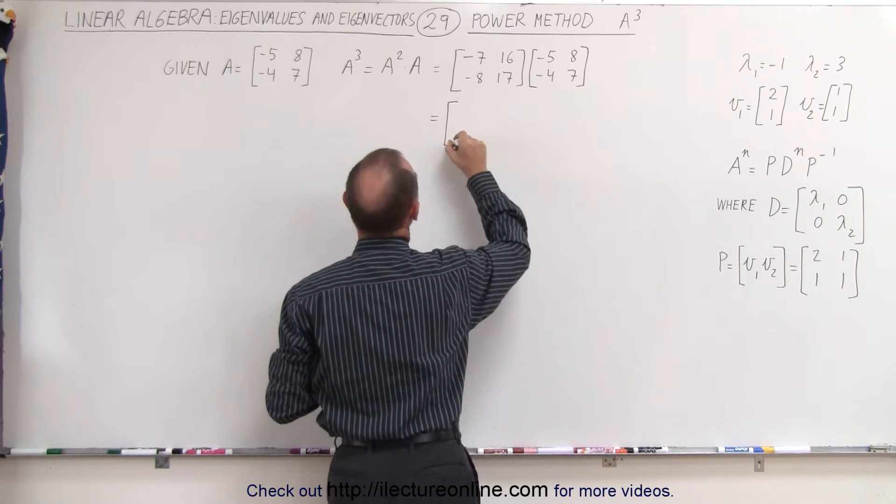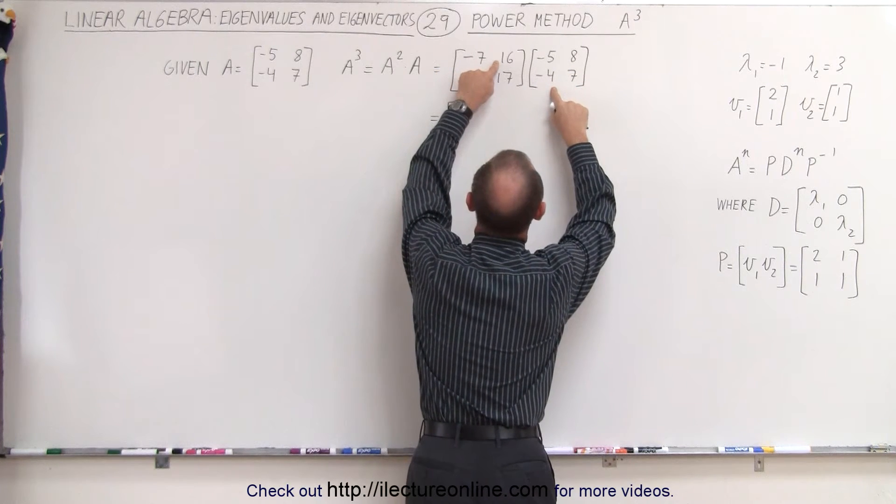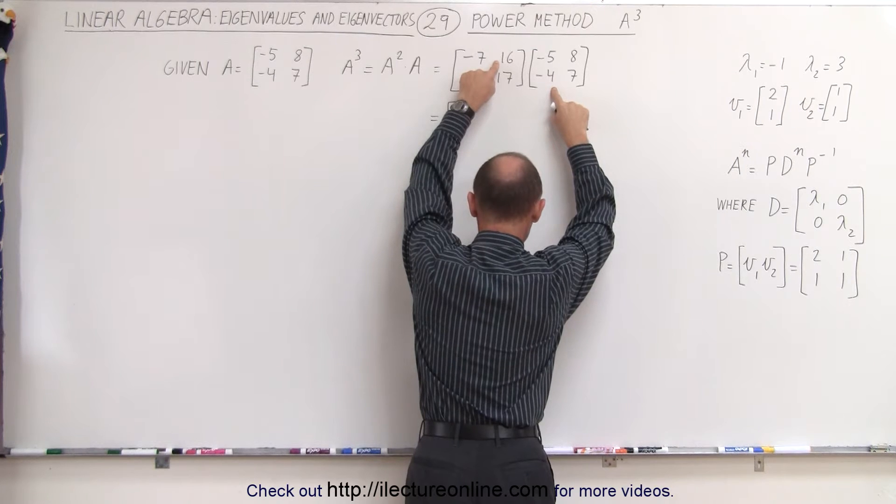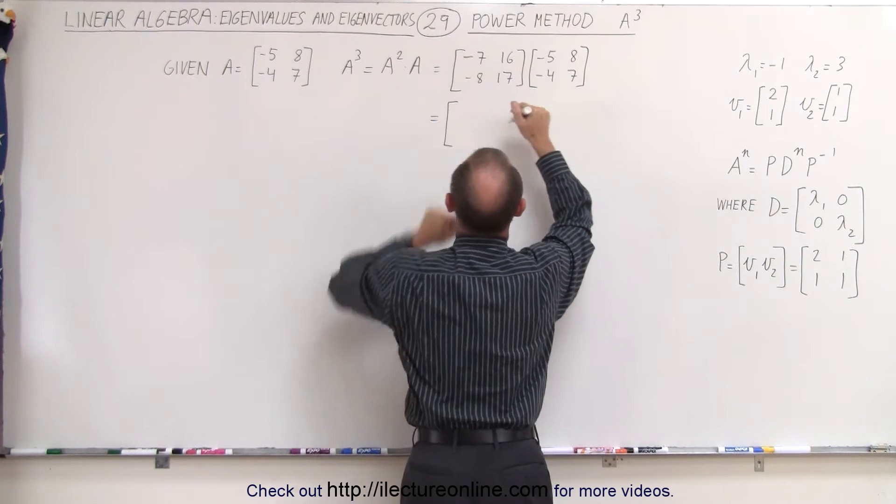This is therefore equal to, this is 35 plus 64. That would be, let's see, that's a positive 35 and a minus 64. That's minus 29.